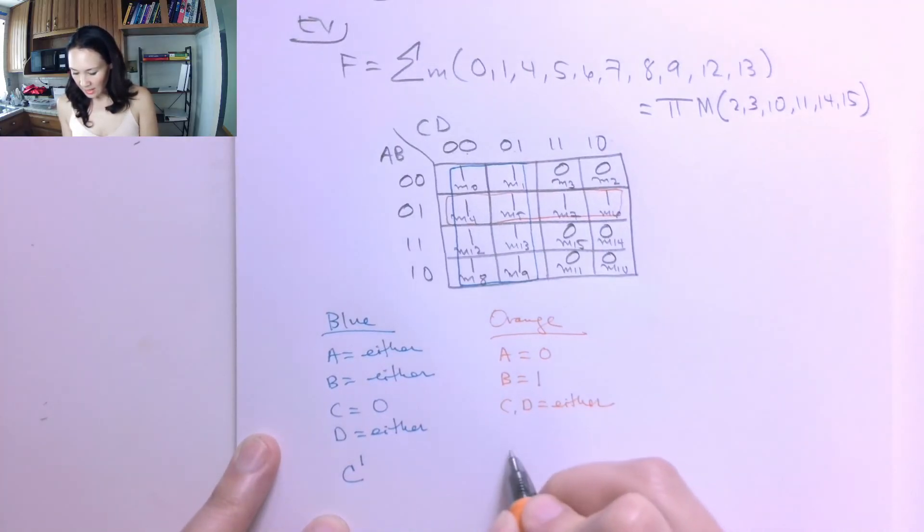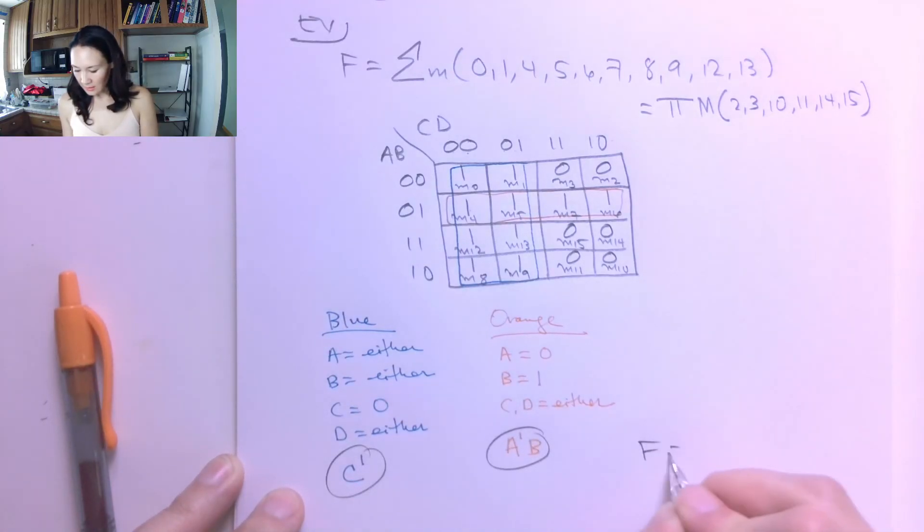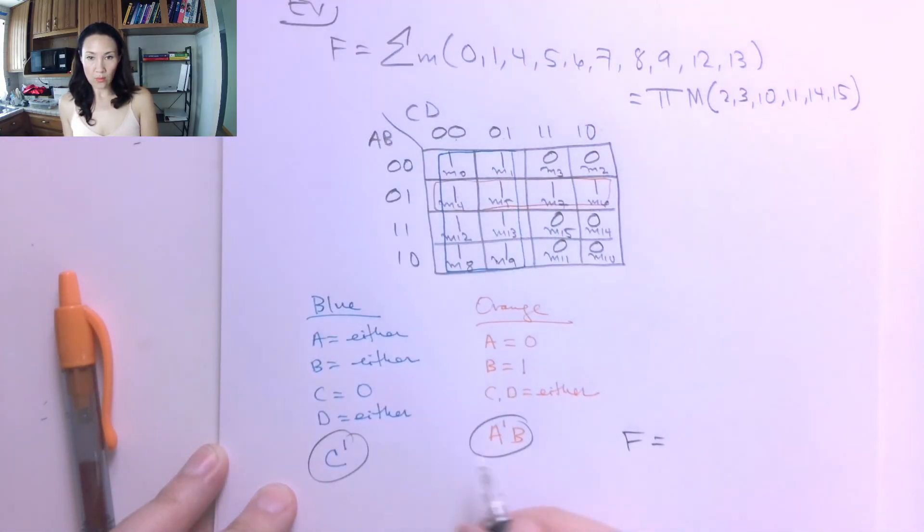That means that my literals are A naught B. So then what I do is I just take these product terms, and to get my reduced F, I just or them together.